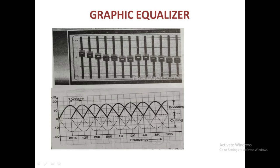Now let us look at the graphic equalizer. A graphic equalizer is a type of tone control circuit. We are dividing the audio spectrum — from around 16 Hz to 20 kHz — into several narrow bands. Each band has a separate slider. With the help of that slider, we can boost or cut the signals.